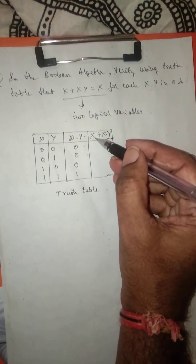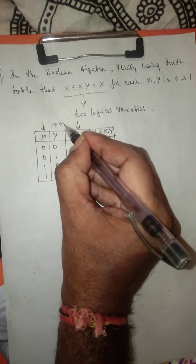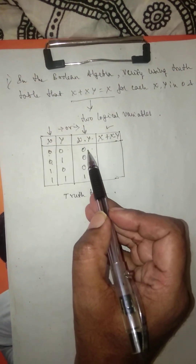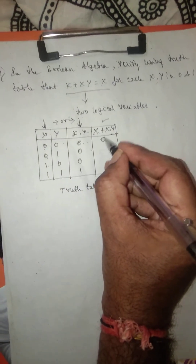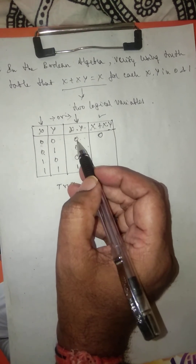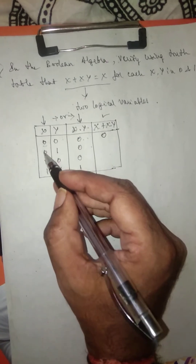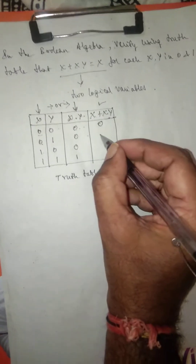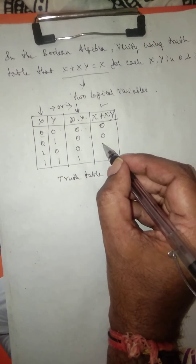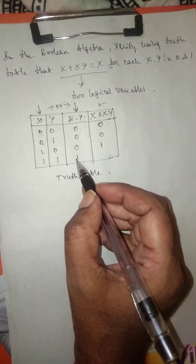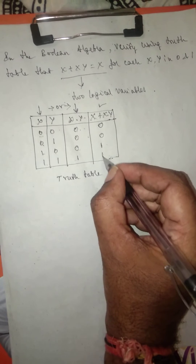Now I apply an OR operation on the x column and the x·y column, because the expression is x OR (x·y). So: 0 OR 0 = 0, 0 OR 0 = 0, 1 OR 0 = 1, and 1 OR 1 = 1. These are the results for the x + (x·y) column.